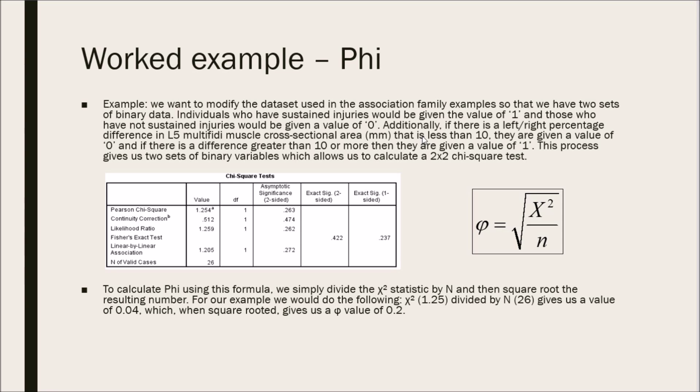Additionally, if there is a left-right percentage difference in the L5 multifidus muscle cross-sectional area that is less than 10, they are given a value of 0. And if there is a difference greater than 10 or more, they are given a value of 1. This process gives us two sets of binary variables which allows us to calculate a 2 by 2 chi-square test.